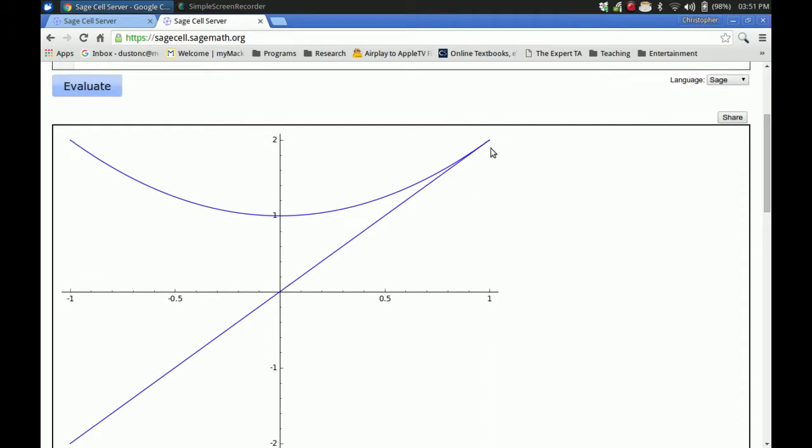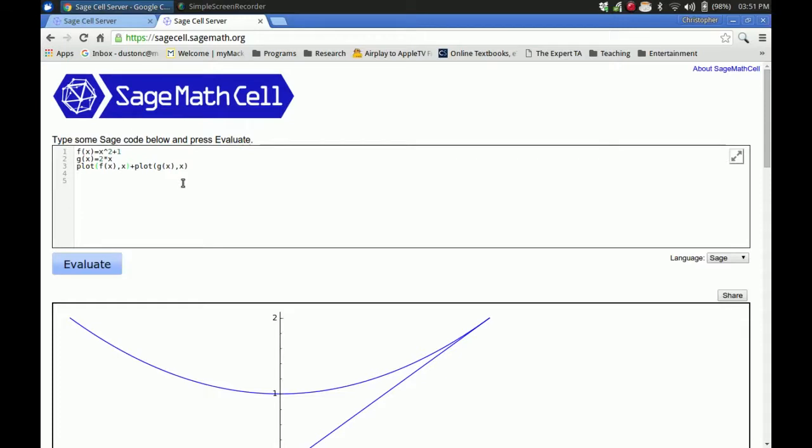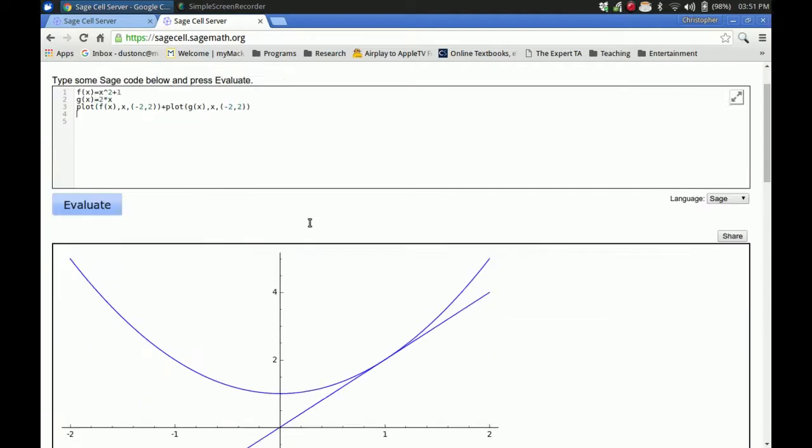So first the window here is not all that useful because where the intercept is right at the edge. So we can change the window by giving a range, let's say negative 2 to 2 on these two functions. So now we have a big enough window so we can see their intercept.